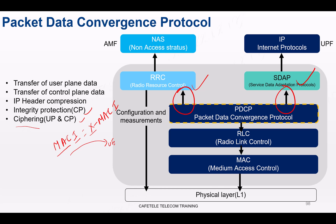In NR, PDCP supports a split architecture. NR PDCP is designed to work in a 5G split architecture where the base station can be divided into a Centralized Unit (CU) and a Distributed Unit (DU).